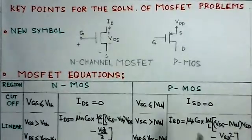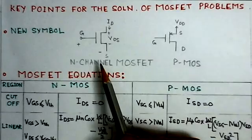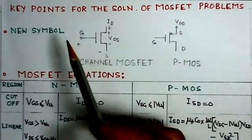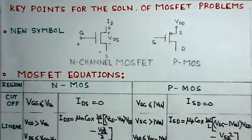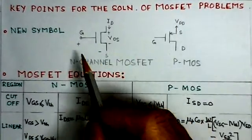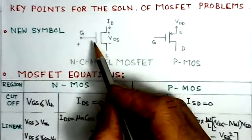So we start with the different key points which need to be considered here which will be helpful for our problem solution. Firstly, the first point is regarding the new symbol.